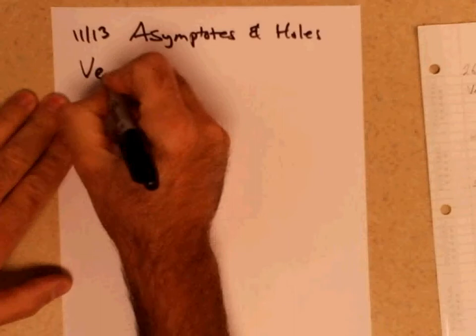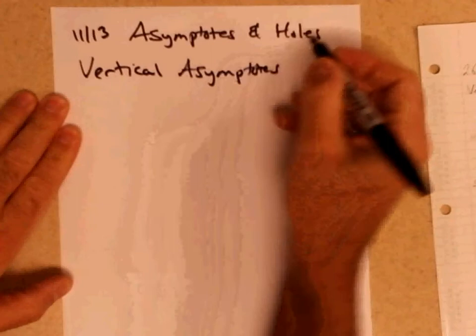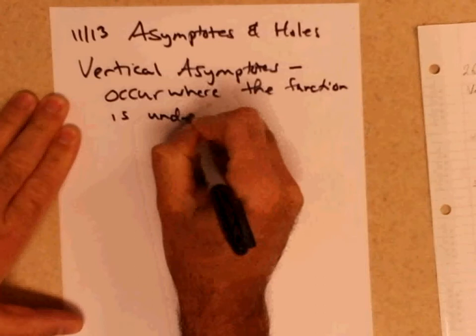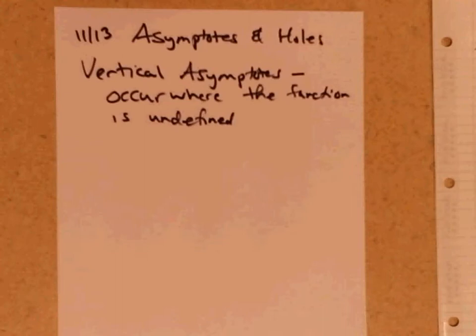We'll go through this to find vertical asymptotes. These occur where the function is undefined. So vertical asymptotes occur where the function is undefined.